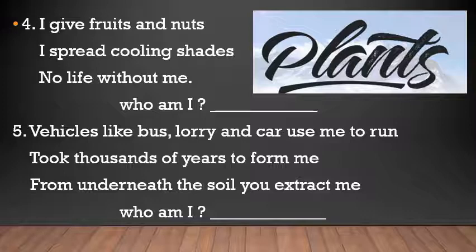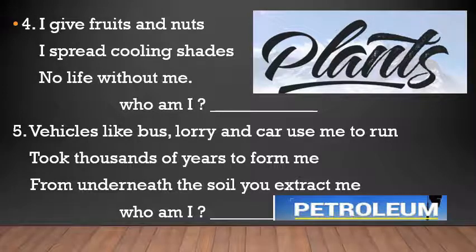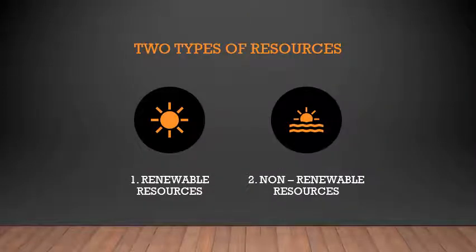The fifth riddle is: 'Vehicles like buses, lorries, and cars use me to run, it took thousands of years to form me, from underneath the soil you extract me — who am I?' What do we use for vehicles to run? The answer is petroleum or petrol. It takes thousands of years for petroleum to form.